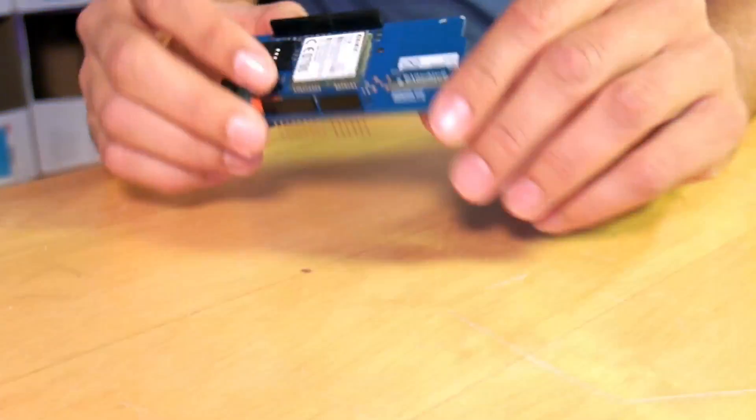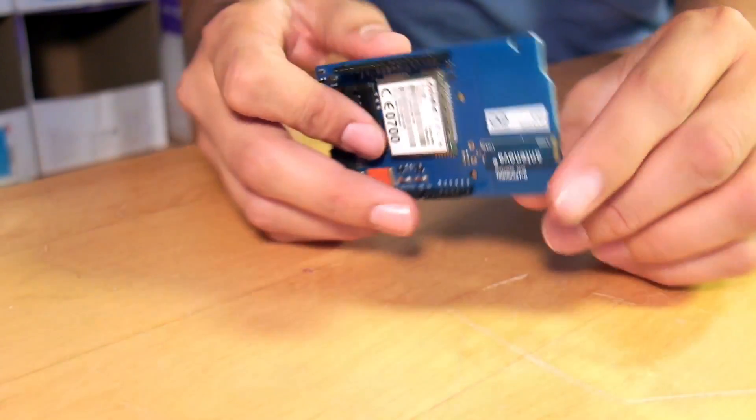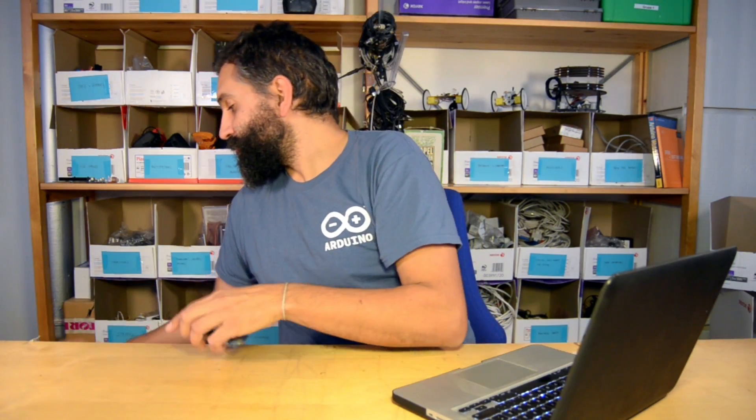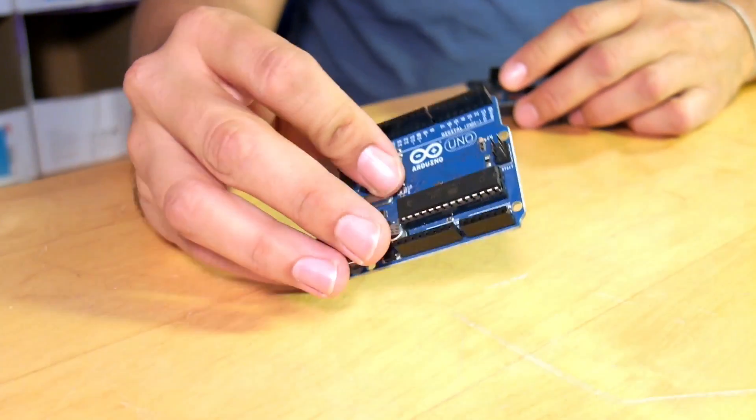The shield looks like this, and like this. This shield that we developed together with Telefonica Digital is designed to be plugged to your Arduino Uno, Arduino Mega, or Arduino Leonardo, in case you have one.